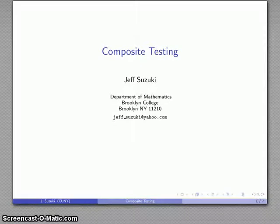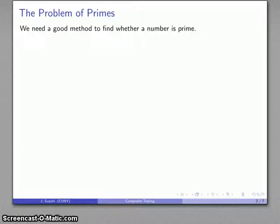One of the things we need to be able to do in order to set up a good cryptographic system is to find a good prime number, and so this leads to the problem of primes. We need to find a good method of determining whether a number is prime.